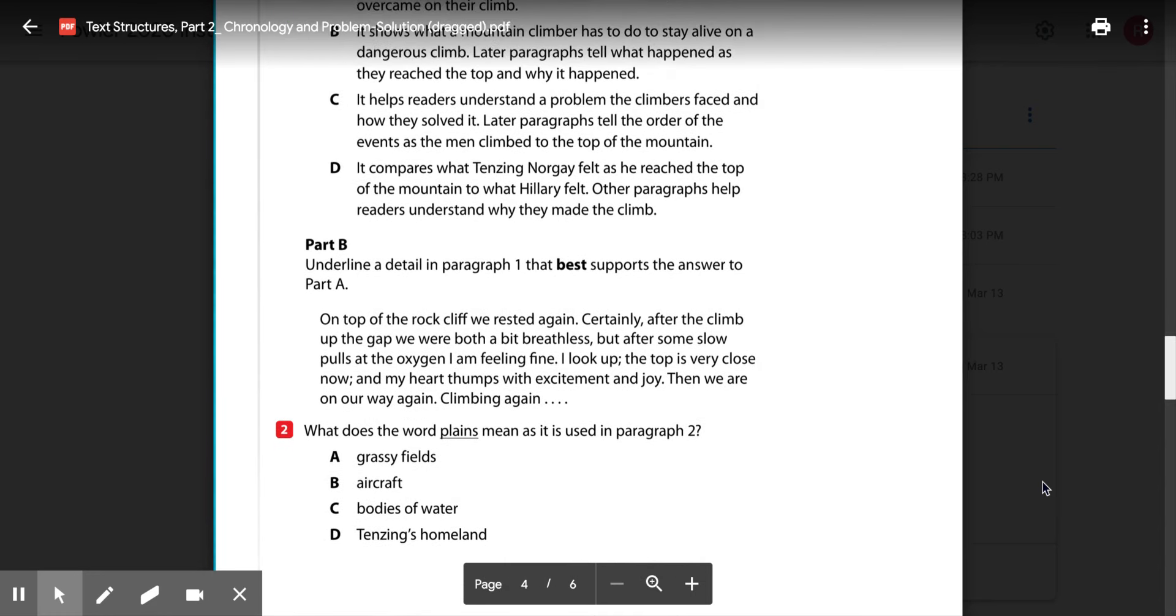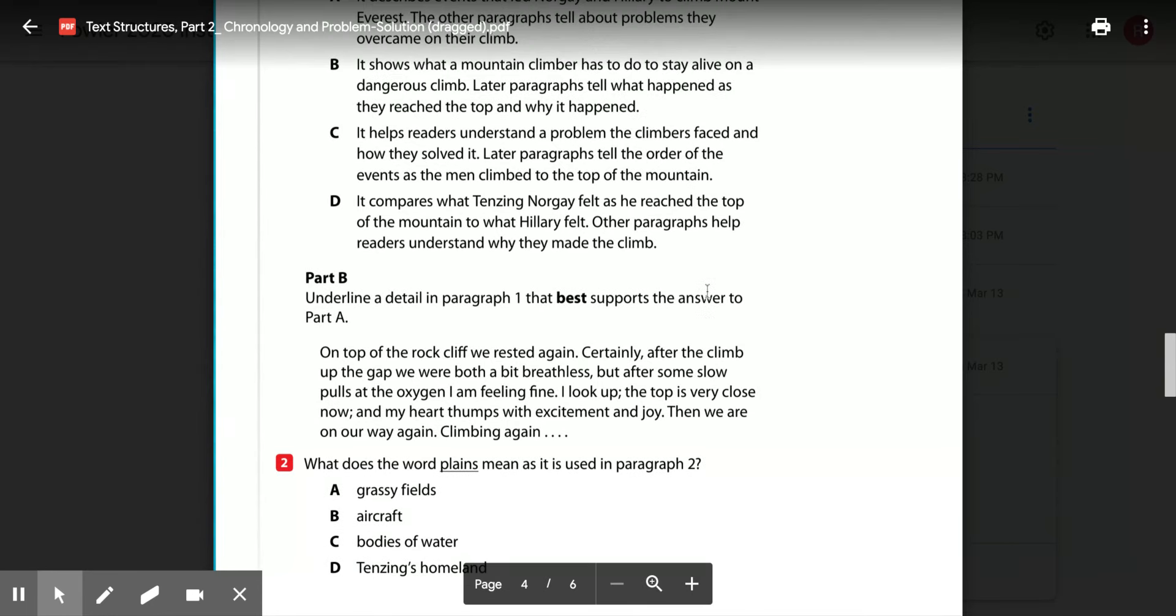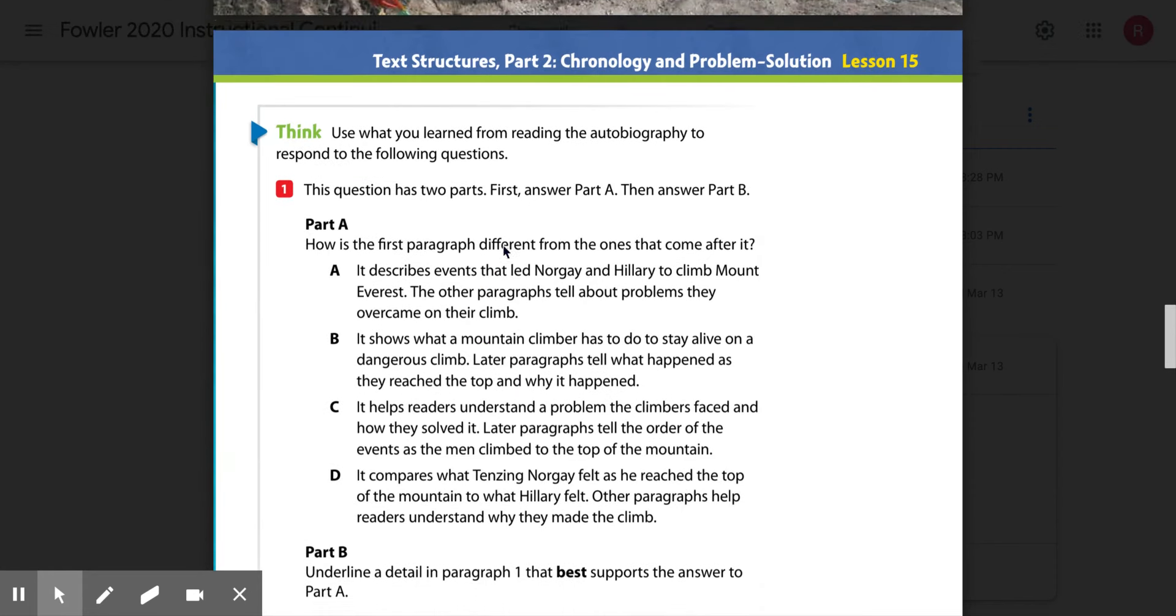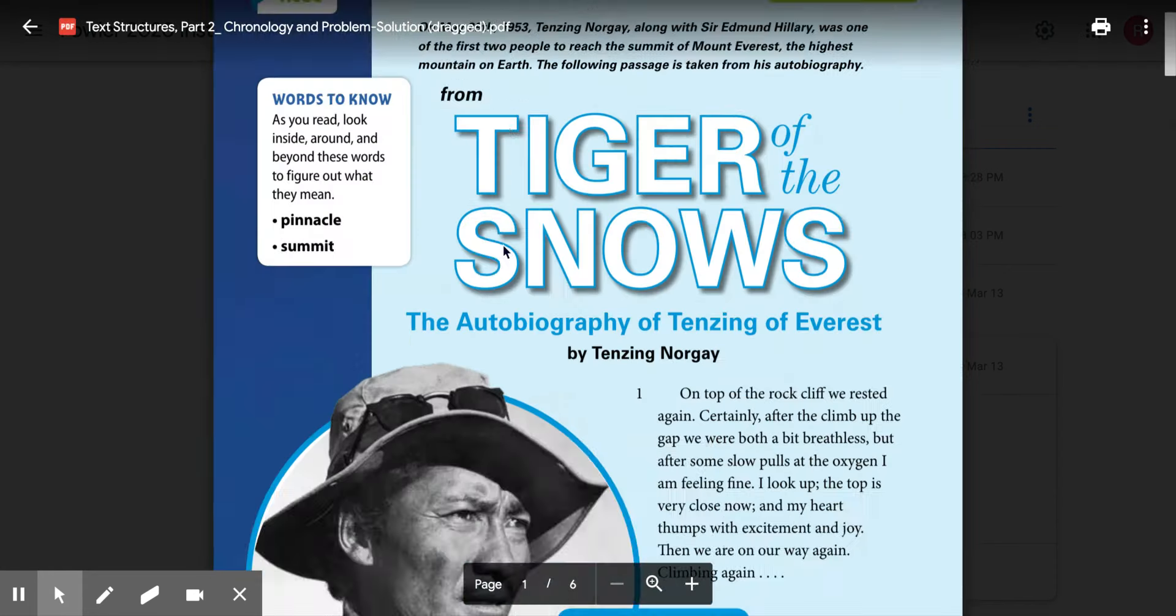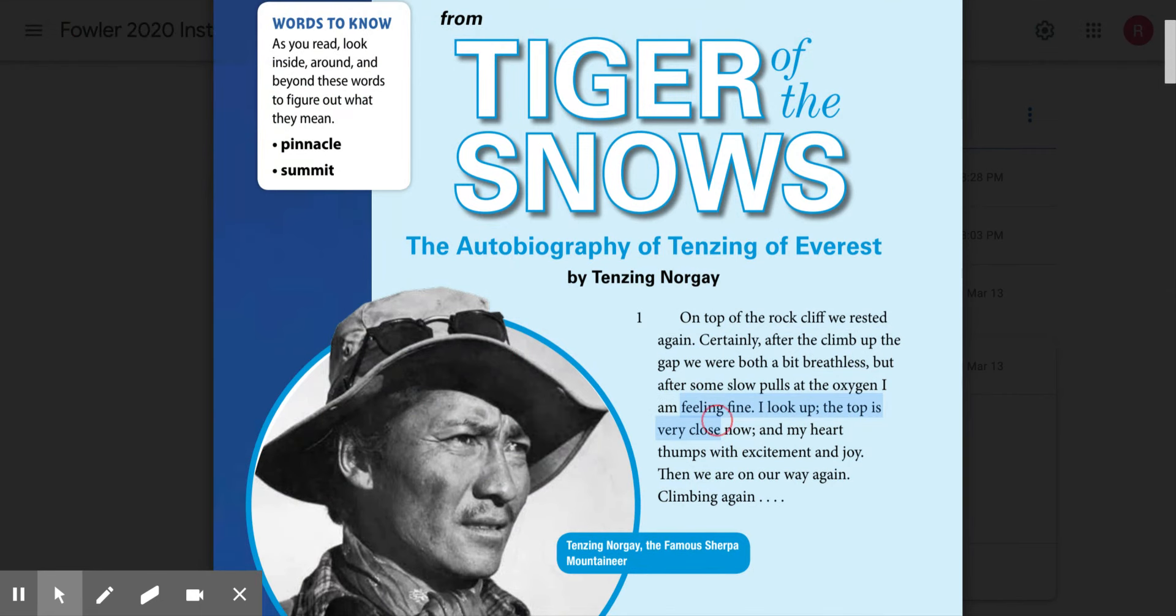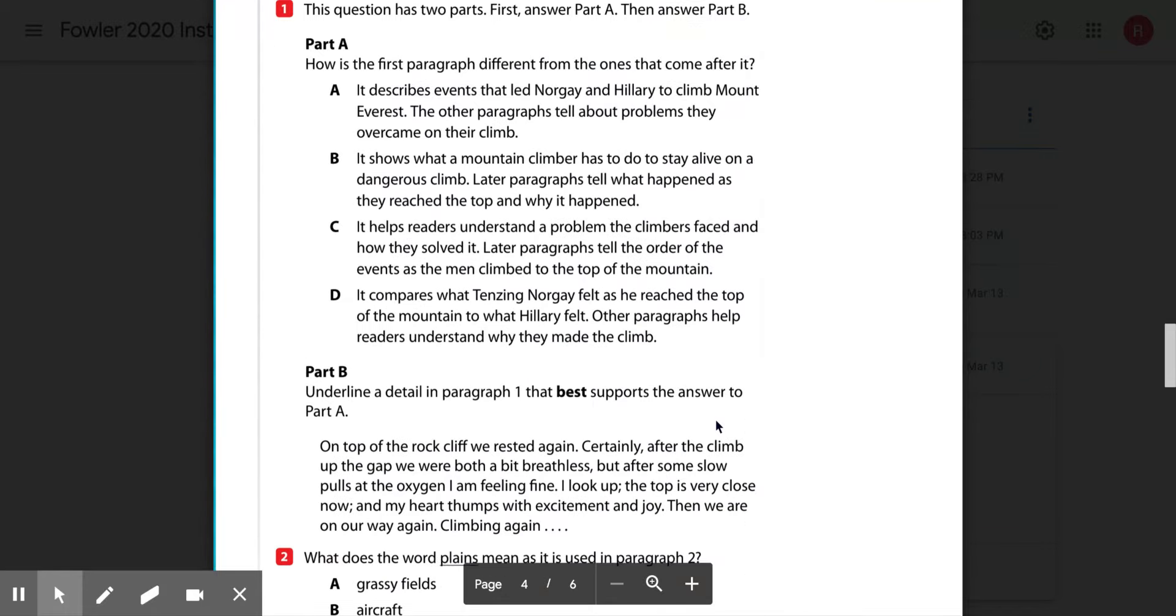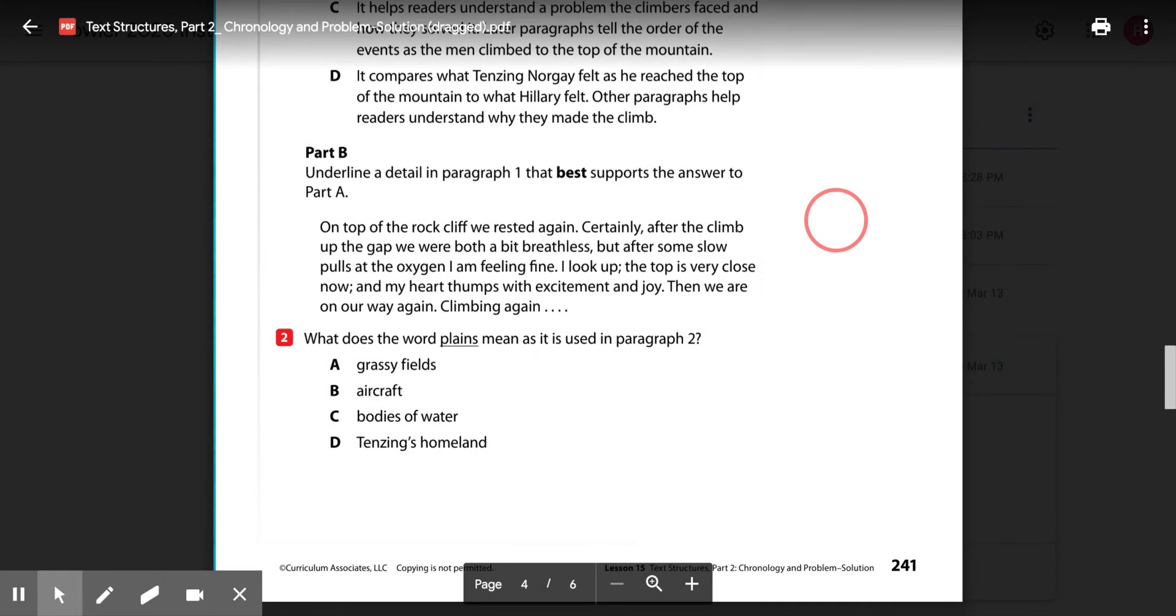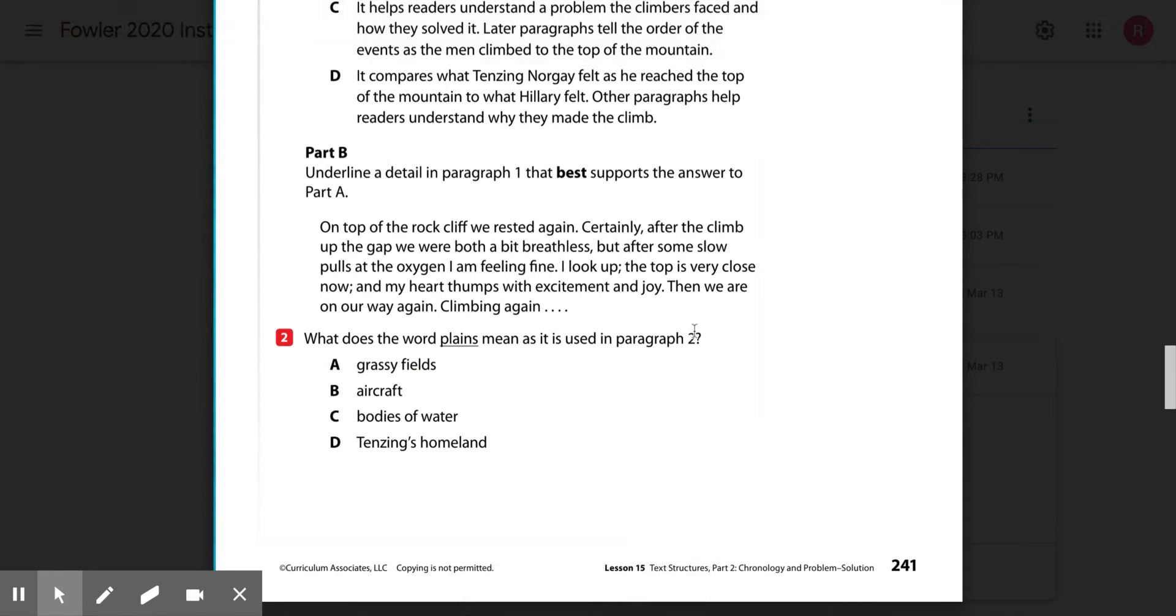Underline a detail in paragraph 1 that best supports the answer to part A. So part A, how is the first paragraph different? And then what detail in the first paragraph supports your answer? So look here, and you're not going to be able to underline it because you don't have the passage printed out for you, but you can write the sentence over to the side right here, and then whenever I get your packet I'll have the answer.